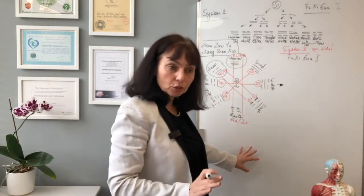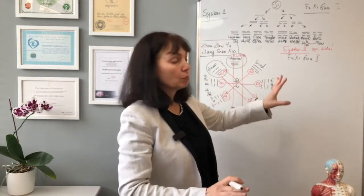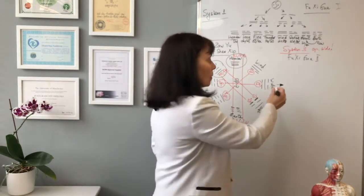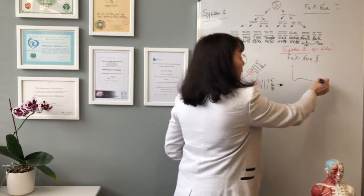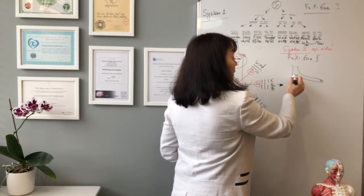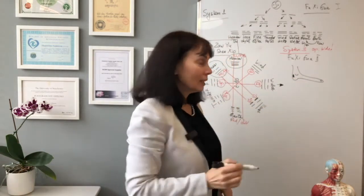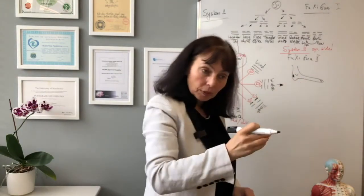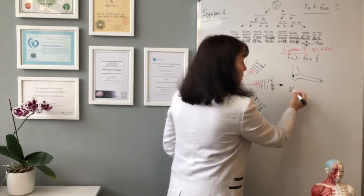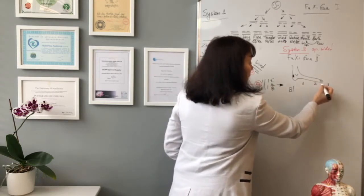According to anatomical structure similarities, which channel do we choose if, for example, you have problems on the Achilles tendon on the bladder side? This is the problem in the Achilles tendon on the bladder side. To treat the bladder, we already have three options: system one, two, and three.